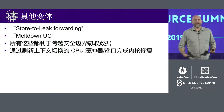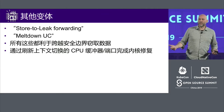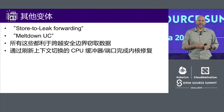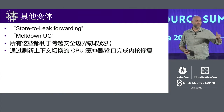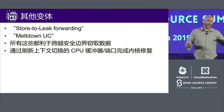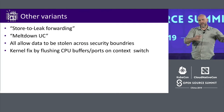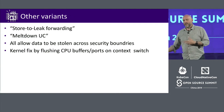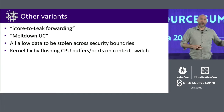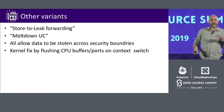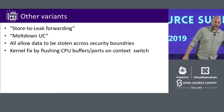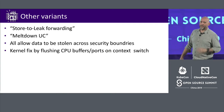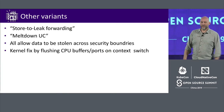There are other variants too — two other groups found Store to Leak Forwarding and Meltdown UC. These are all little tweaks on the same general idea, in the same areas of the processor. Again, you can steal and read data across security boundaries, and again we fix the problem by flushing buffers.